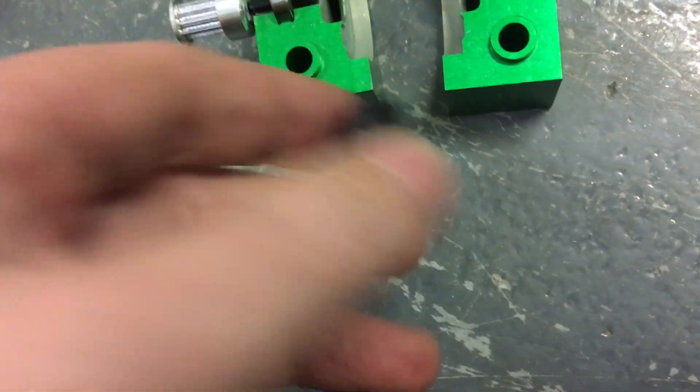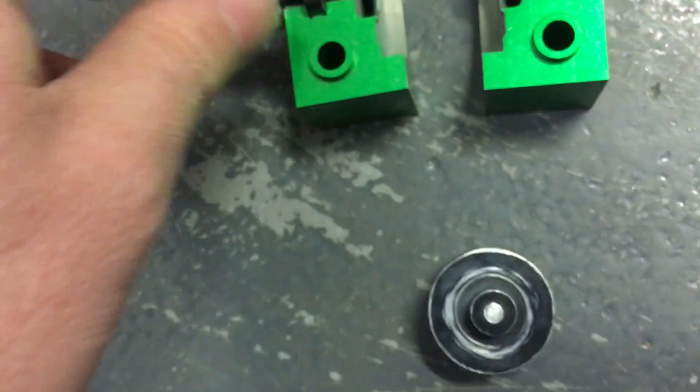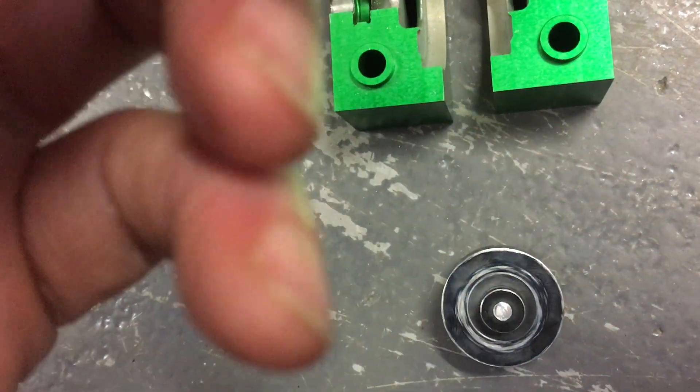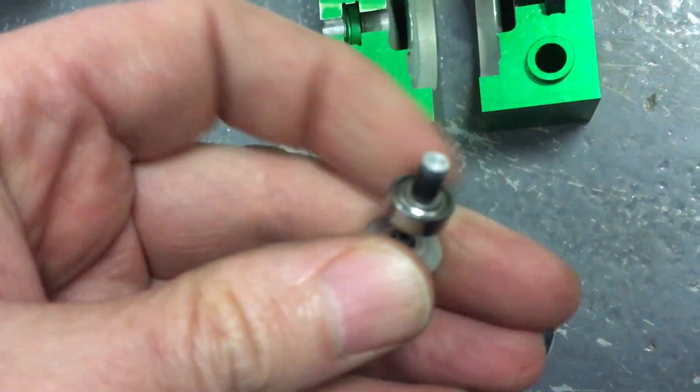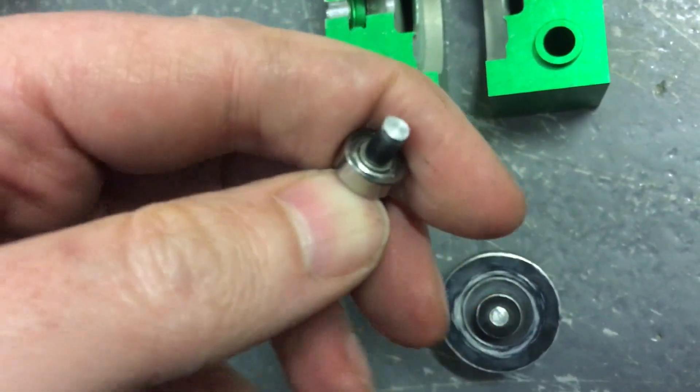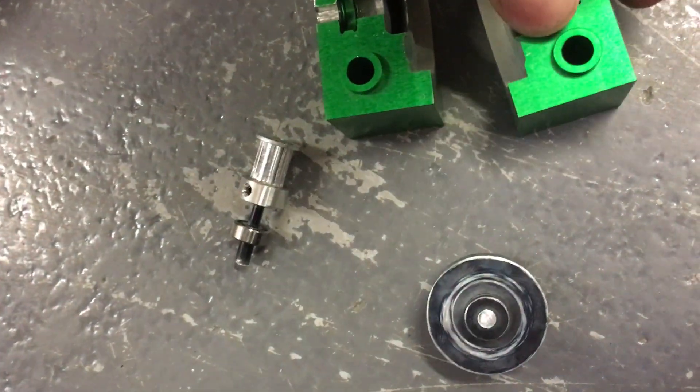Crash. Yeah, it had the cheap bearings. These are just cheap GRW bearings, less than a quid, only rated at 80,000.